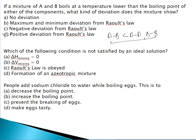Question 14: Which condition is not satisfied by an ideal solution? For an ideal solution, ΔH_mixing = 0, ΔV_mixing = 0, and it obeys Raoult's law. The formation of an azeotropic mixture is not satisfied by an ideal solution following Raoult's law.